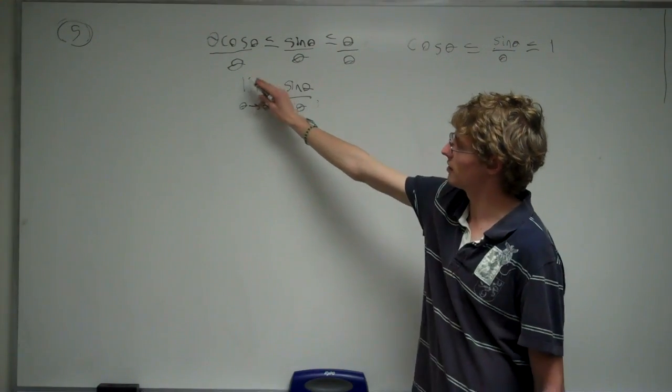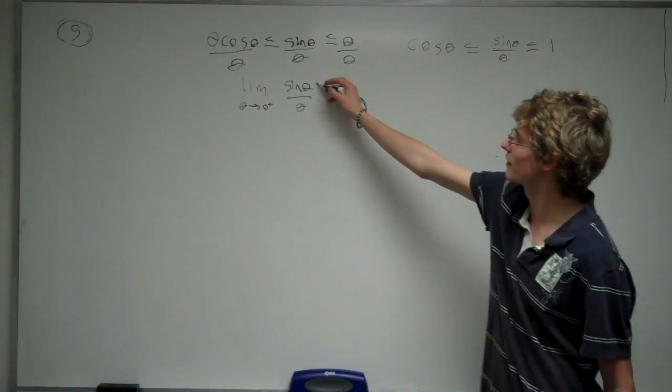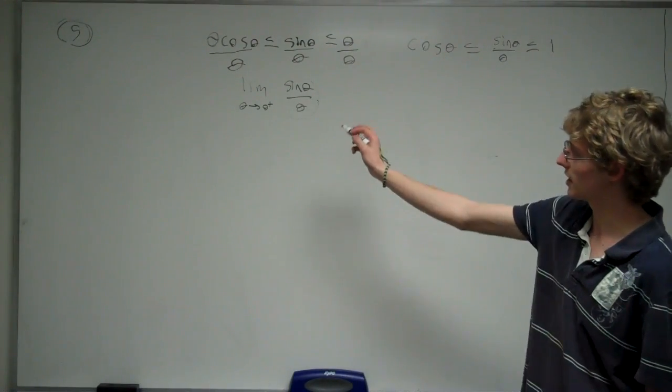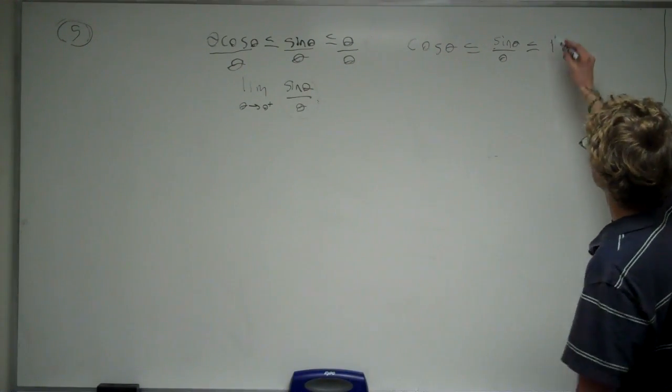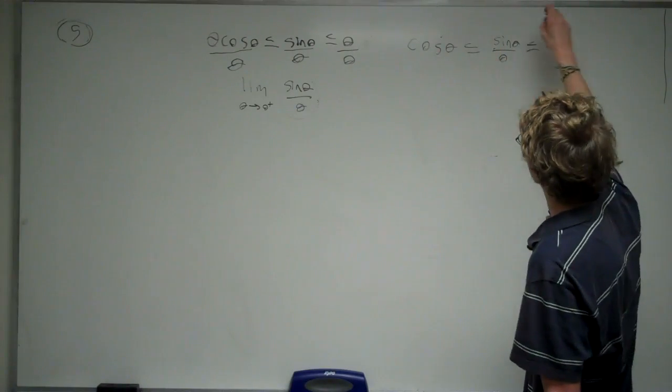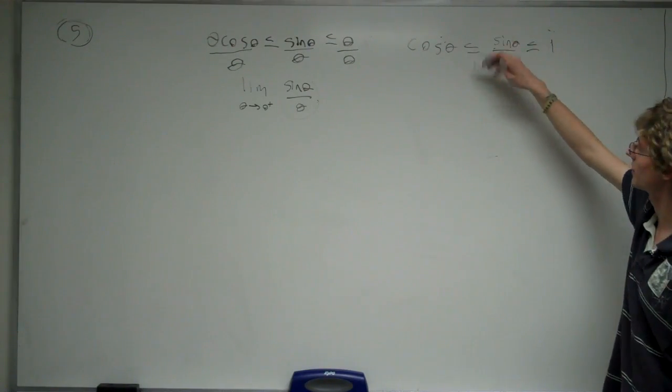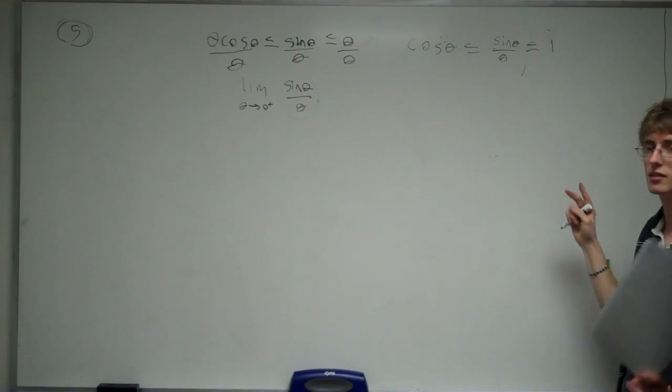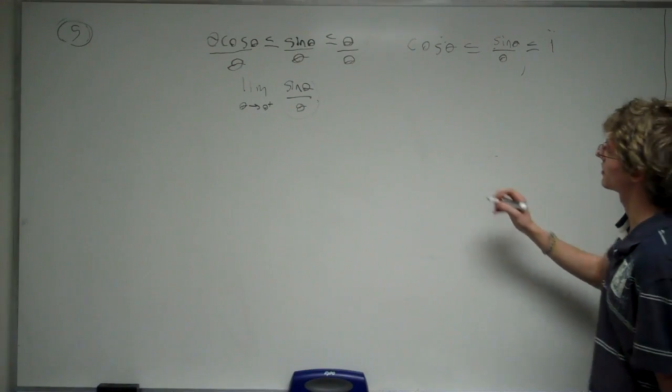Now, to find the limit as theta approaches 0 from the right of this value, we're going to take the limit as theta approaches 0 from the right of both the values that squeeze sine theta divided by theta.